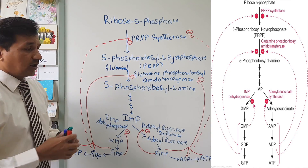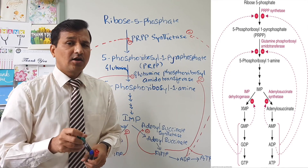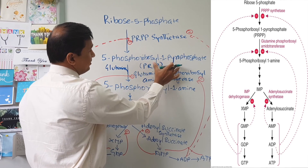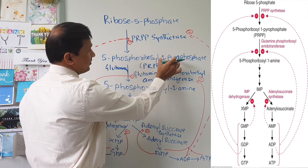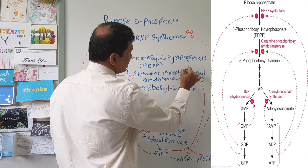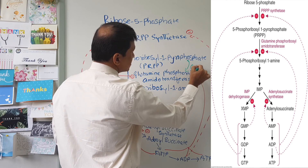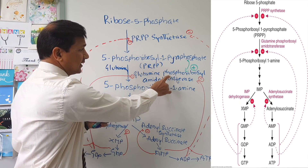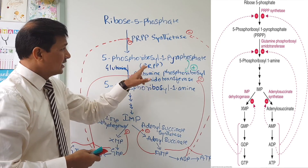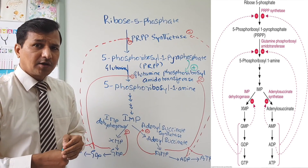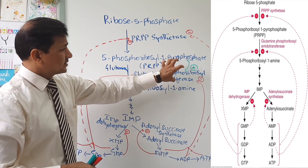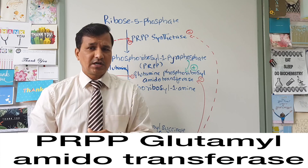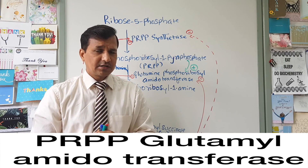Now for the positive modulator: accumulation of PRPP (phosphoribosyl pyrophosphate) has a positive effect on glutamine phosphoribosyl amidotransferase. This is the only positive modulator on this enzyme. Also note that glutamine phosphoribosyl amidotransferase is also called PRPP glutamyl amidotransferase — so there are two names for this enzyme.